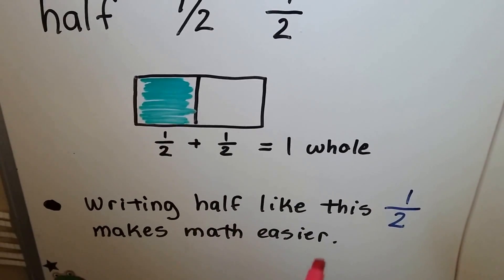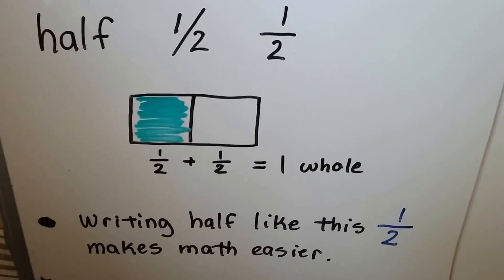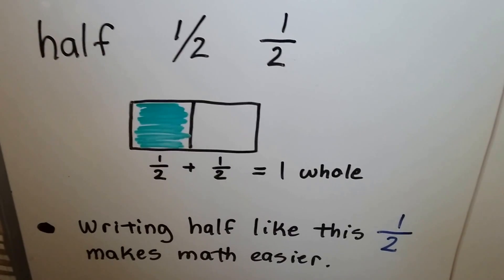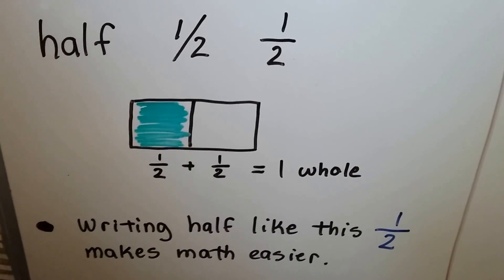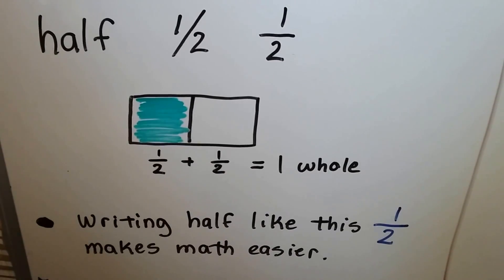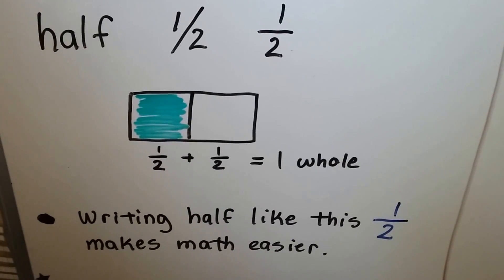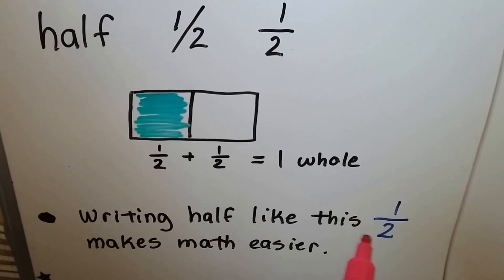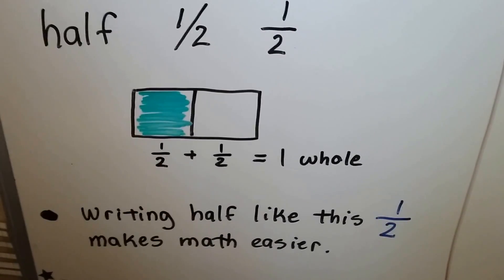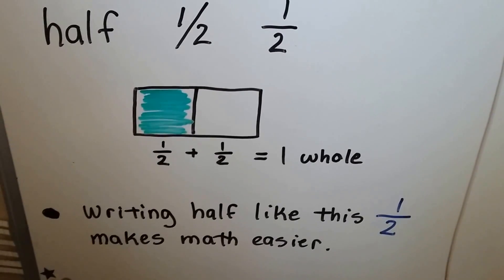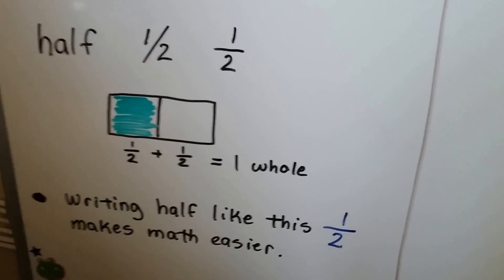You may not notice it for third or fourth grade, but when you get into middle school and you start doing algebra and adding and subtracting and multiplying and dividing fractions, and in high school when you do algebra and calculus, you're going to thank me. Try to get in the habit of writing your fractions with a straight bar like this. It's going to make it a lot easier for you when you have to add, subtract, multiply, and divide them. That'll be coming up when you get closer to middle school.